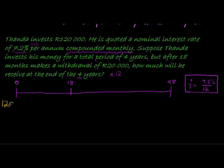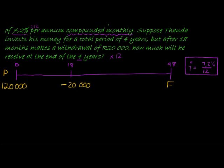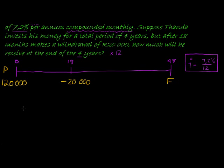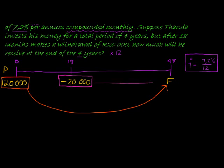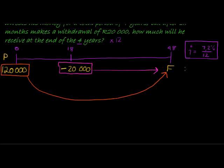What is happening on this thing? First of all, he invests 120,000, and then at 18 months he's making a withdrawal, almost thinking of it as a negative investment. A withdrawal, and that's it, and we are asked to find the future value. This obviously being the present value, there's some withdrawal here along the way. Don't go and try and remember those formulas. Simply treat these two investments separately.